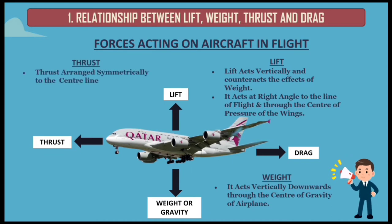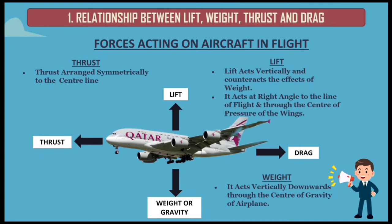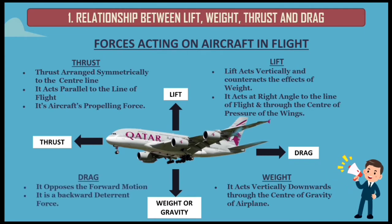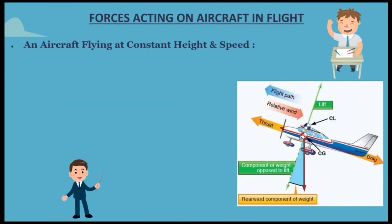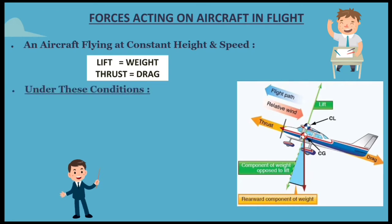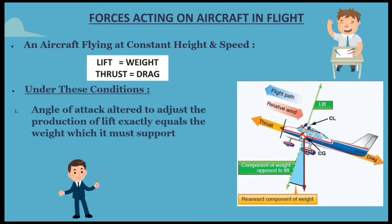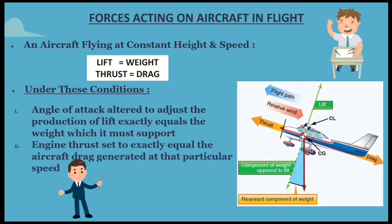Thrust has a definite relationship with drag. Thrust is arranged symmetrically to the centerline and acts parallel to the line of flight. Thrust is the aircraft's propelling force. Drag must be overcome for the aircraft to move, and movement is essential to obtain lift. Drag opposes the forward movement and is a backward deterrent force. For an aircraft flying at constant height and speed, lift equals weight and thrust equals drag. The angle of attack is altered to adjust the production of lift to exactly equal the weight it must support, and engine thrust is set to exactly equal the aircraft drag generated at that speed.